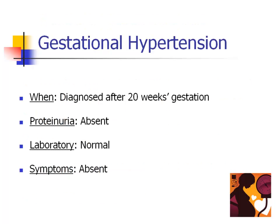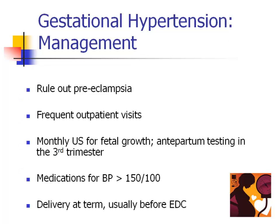The next hypertension category is gestational hypertension. This is hypertension diagnosed after 20 weeks of pregnancy in a previously normotensive patient. Proteinuria is absent, labs are normal, and symptoms are also absent. During evaluation of gestational hypertension, pre-eclampsia should be ruled out. Frequent outpatient visits are scheduled because these patients are also at increased risk for developing worsening blood pressures or pre-eclampsia.